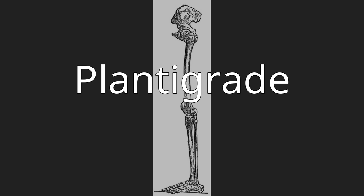Plantigrade. In terrestrial animals, plantigrade locomotion means walking with the toes and metatarsals flat on the ground. It is one of three forms of locomotion adopted by terrestrial mammals.